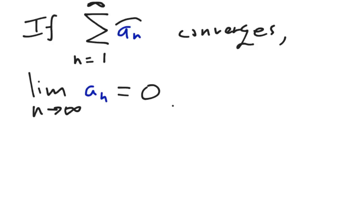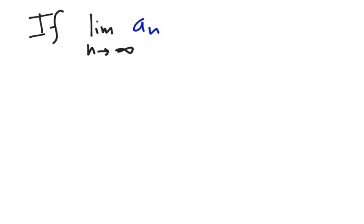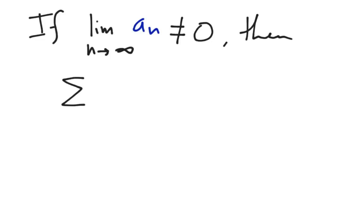Think about it: if at infinity we're adding up something that's not zero, then it's not going to converge, because we'd eventually add up something like 1 plus 1 plus 1 plus 1, and that would just not converge. To name the nth term test, what we essentially do is flip the statement around — it's a contrapositive statement. We say that if the limit as n approaches infinity of a_sub_n does not equal zero, then the series diverges.